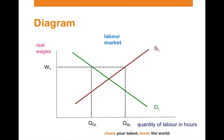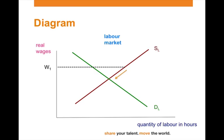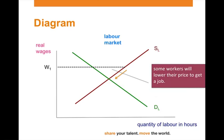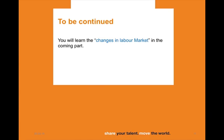Let us explore how equilibrium in the labor market is achieved. In the situation we see excess supply — at the given wage rate, more workers are willing to offer their services than there is demand for these services. This means that workers will have to lower their wages in order to get a job. As a consequence of this lowering in price, employers will hire more workers, eventually establishing equilibrium at W_E. In the next video we will have a look at how changes in the labor market affect equilibrium.